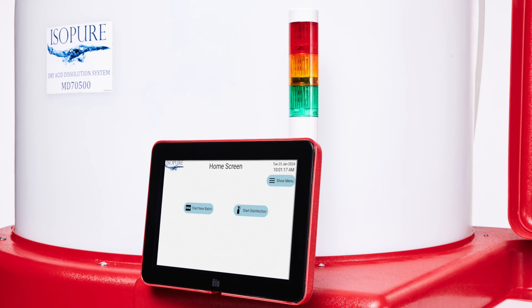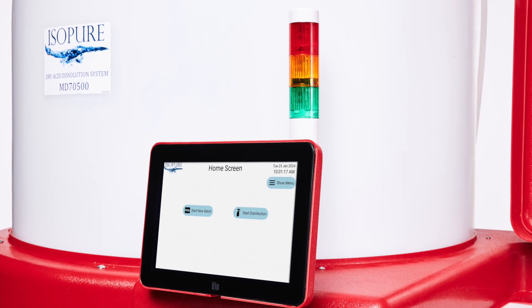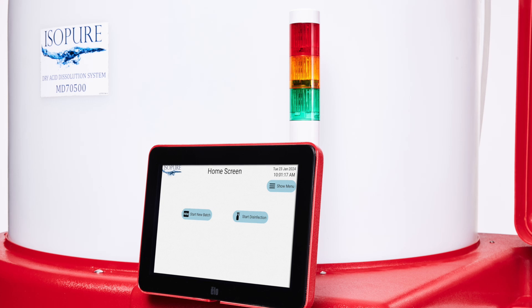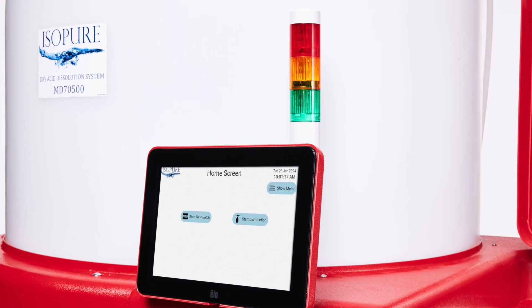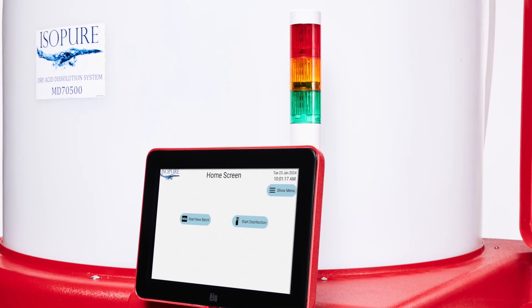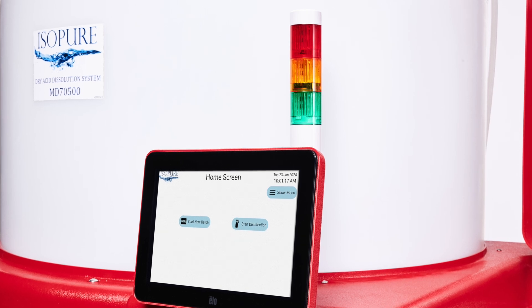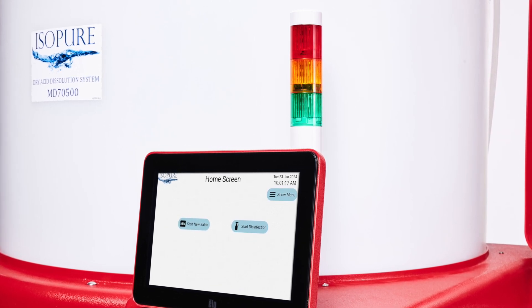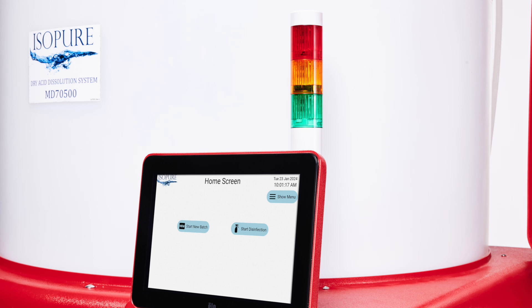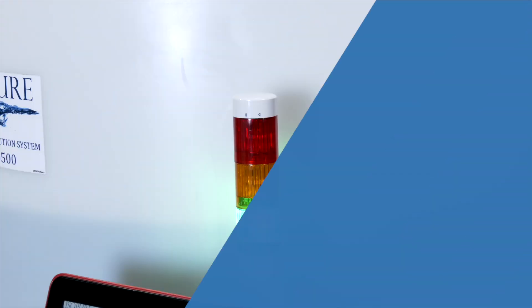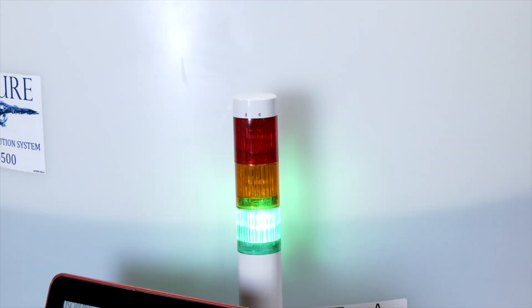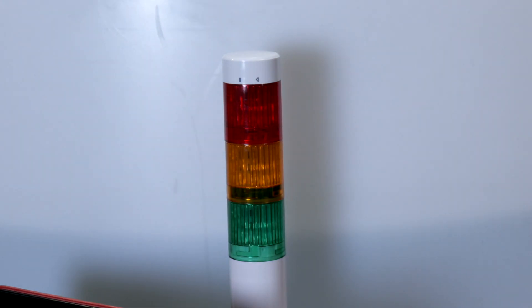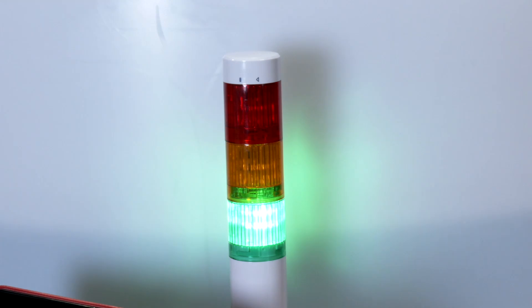The status indicator light is intended to provide the user with signals regarding the progress of automatic processes, the need for action, or any errors that may occur. A steady green light indicates that the system is plugged in and operational. At the end of mixing, the green light will flash when the batch has passed the specific gravity requirement and is ready to be transferred.